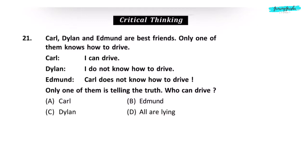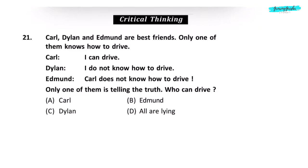If Dylan is true, Edmund must be lying. It means Carl also knows how to drive. But it goes against the fact that only one of them can drive. He is also lying. If Edmund is true, both Carl and Dylan's statements become false. All assumptions are being kept in mind. Thereby, Edmund is true. Since Dylan was lying, it means he knows how to drive. So correct answer is option C.